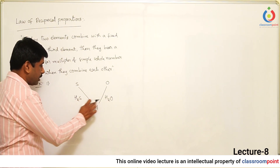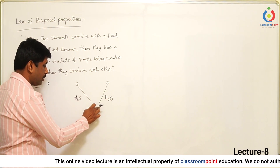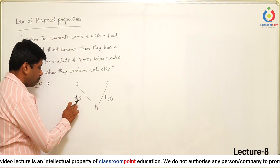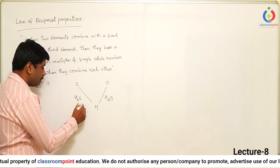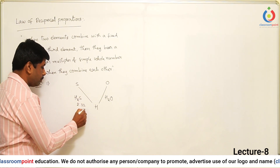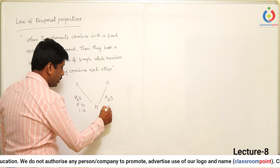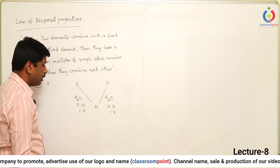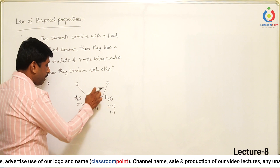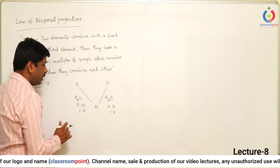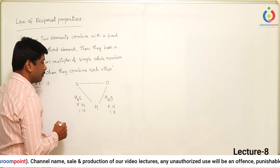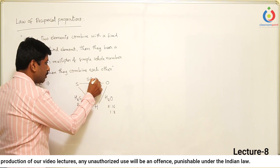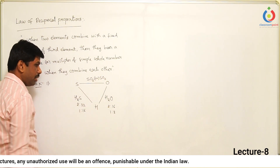With a fixed mass of 2 grams of hydrogen: sulfur combines in a ratio of 2 is to 32 grams, which means 1 is to 16. Oxygen combines in a ratio of 2 is to 16 grams, which means 1 is to 8. So when two elements combine with the fixed mass of the third element and then combine with each other, whatever compounds they produce, they bear a simple whole number ratio.